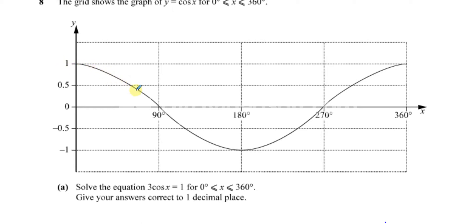We should realize that it starts at 0,1, then curves down to 90,0, then 180 minus 1, then 270,0, then 360,1. We should have an idea how to sketch this if it's not given to us in the question.